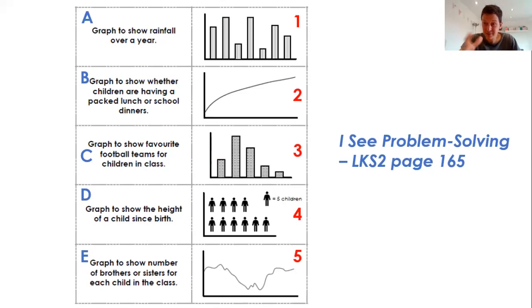Football teams, the class, there'll be no pattern in that graph, so that's example one. There'll be lots of different groups there. If we're looking at height of a child since birth, that, of course, would be a line graph, and it would be a smooth increase. So that would be two as opposed to five. And then number of brothers or sisters will generally have some children will have no siblings. More will generally have one, and then the amounts will decrease as that increases. So it's getting children to think really analytically there.